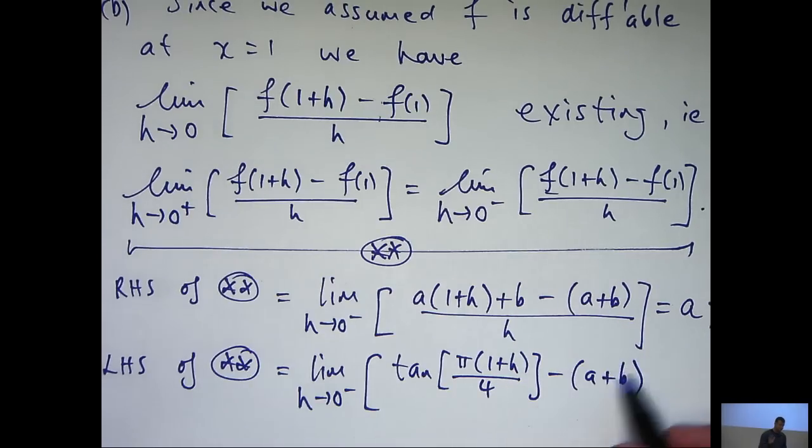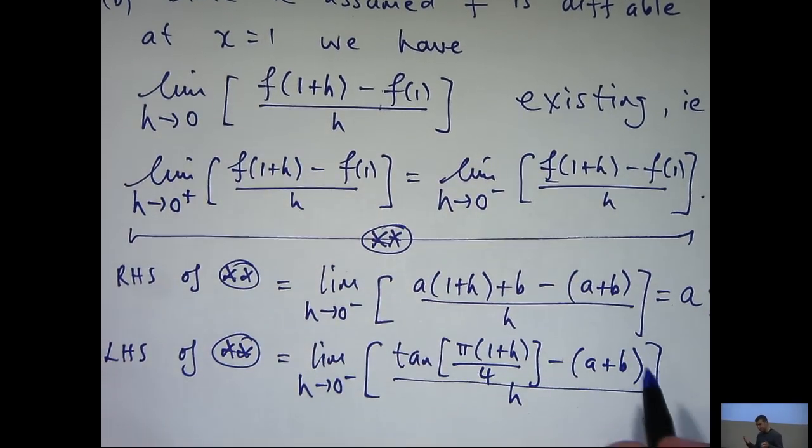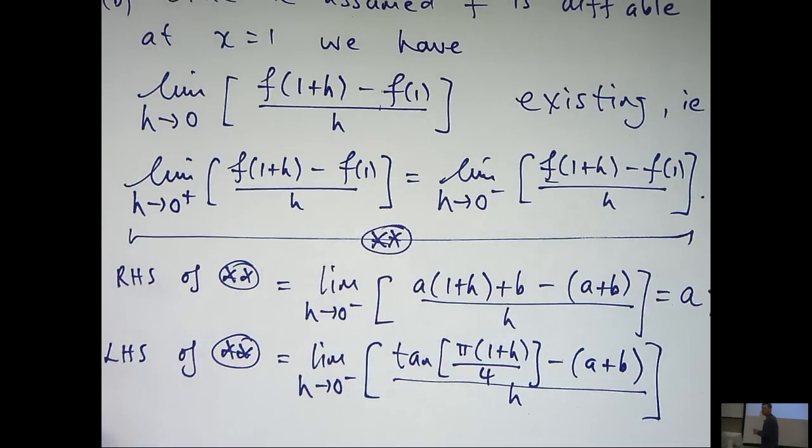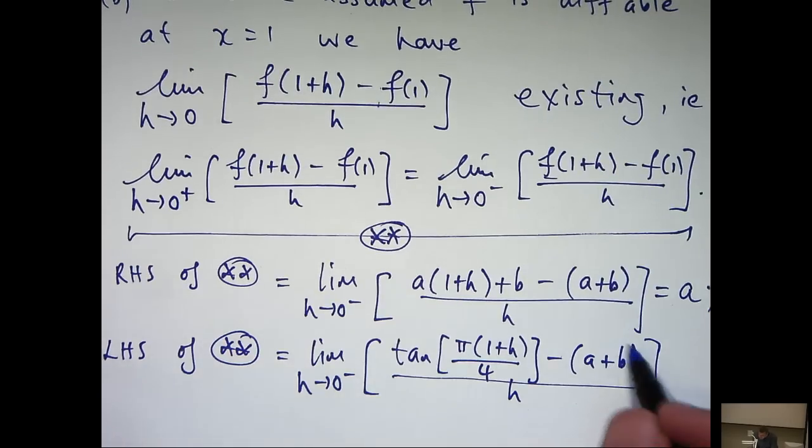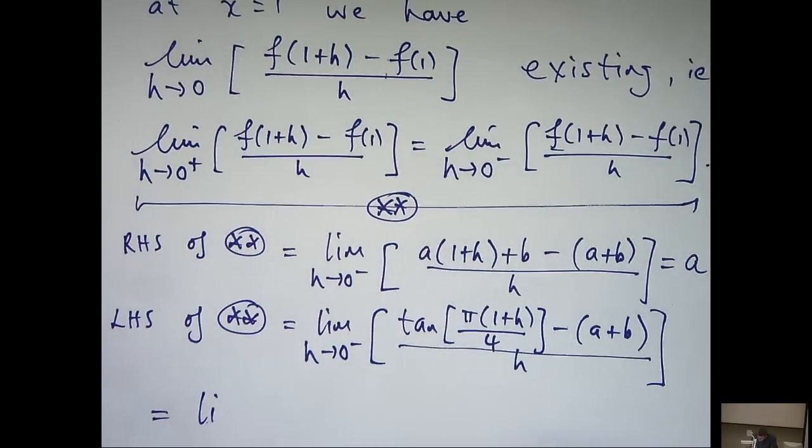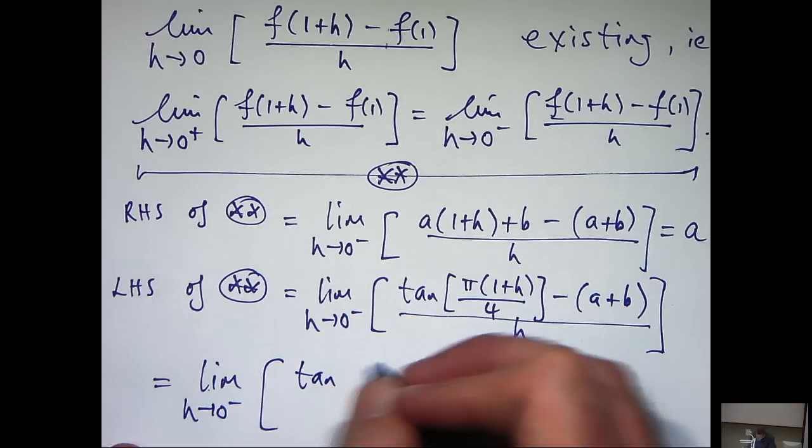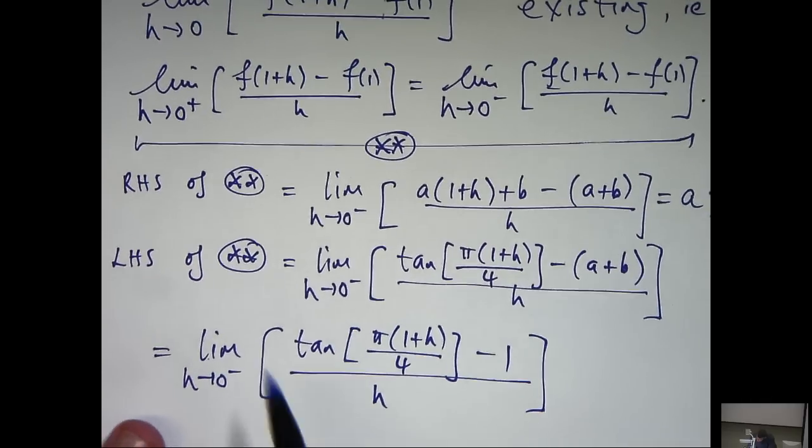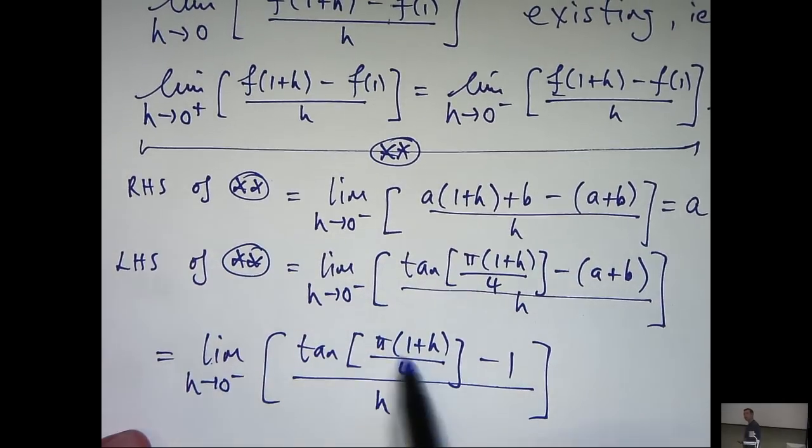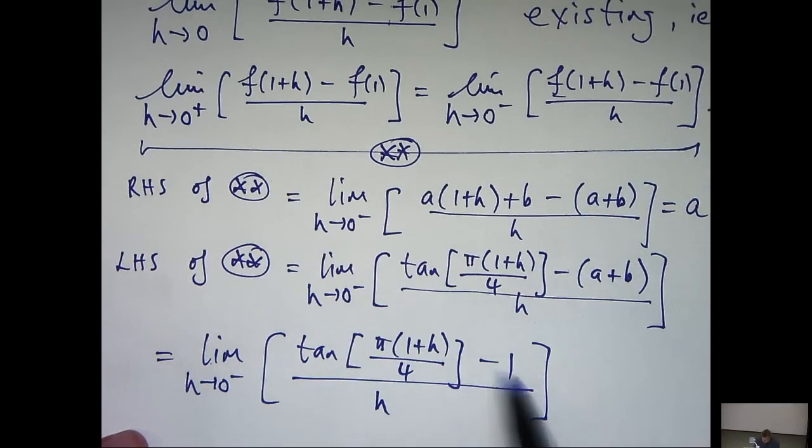So this is still f of 1. It's looking a bit messy, but I can actually simplify this by going back to part a and remembering that a plus b equals 1. So, I can replace this with just 1. Now, if I naively try to take the limit top and bottom, this will give me tan of π on 4, which is 1, so I'll get 1 minus 1 on the top, which is 0. And I'll get 0 on the bottom. 0 over 0, it's an indeterminate form.